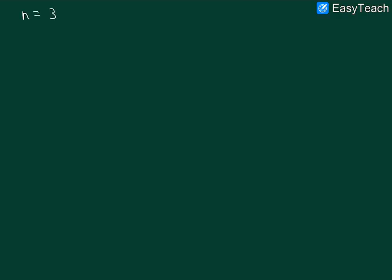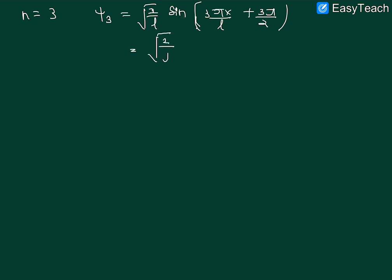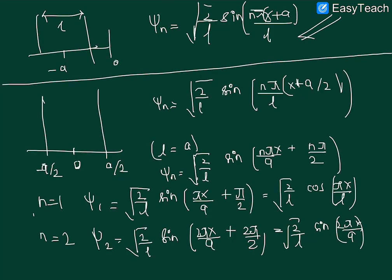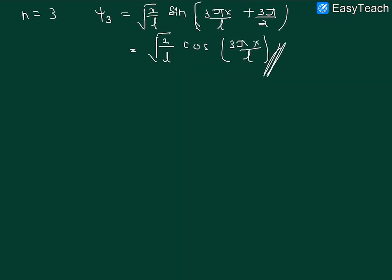For the second excited state, n = 3: ψ_3 = √(2/a) sin(3πx/a + 3π/2), which turns into ψ_3 = √(2/a) cos(3πx/a). So we have found all three wave functions — ψ_1, ψ_2, and ψ_3.